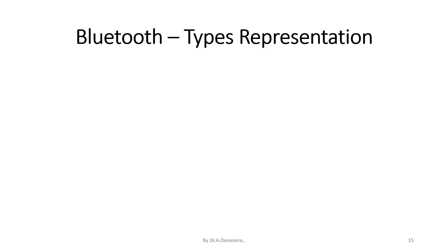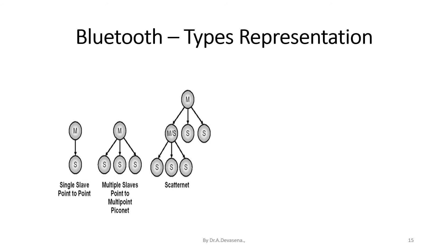Here is a representation of Bluetooth device connection types. The first diagram shows a single slave — point-to-point connection. The second diagram shows multiple slaves — point-to-multipoint, also called a Piconet. In the Scatternet diagram, one device acts as master with three slaves, and one of those slave devices also acts as a master for a second Piconet while remaining a slave in the first.